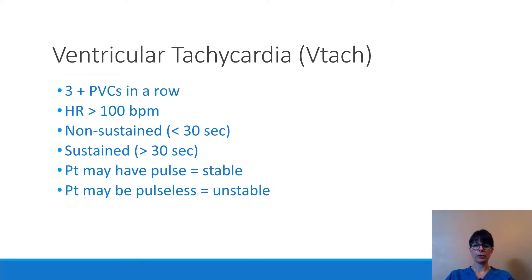Ventricular tachycardia, also known as VTAC, usually means there are three or more PVCs — premature ventricular contractions — in a row. The heart rate is usually greater than 100, and VTAC can be non-sustained, meaning less than 30 seconds, or sustained, meaning greater than 30 seconds. Importantly, the patient may have a pulse with VTAC, meaning they are stable or somewhat stable, or they may be pulseless, which means they are certainly unstable.